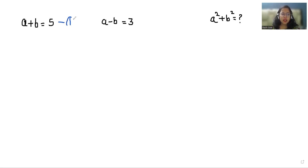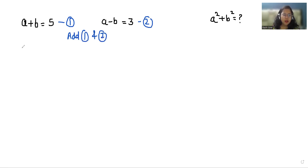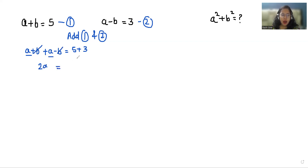I am considering this as equation number 1 and this as equation number 2. Now I am going to add both the equations. So a plus b plus a minus b equals 5 plus 3. So a plus a is 2a, and plus b minus b cancel out each other, and 5 plus 3 is 8.